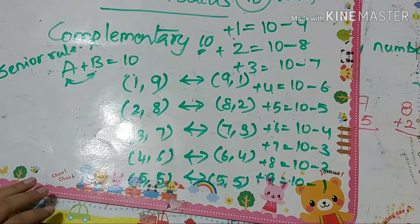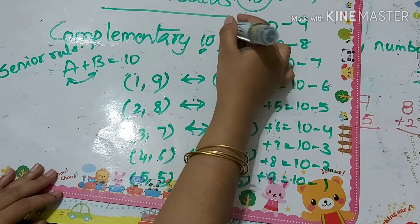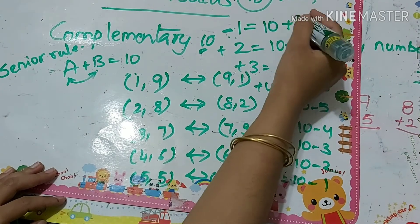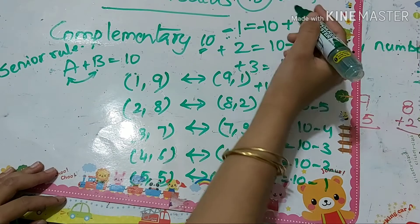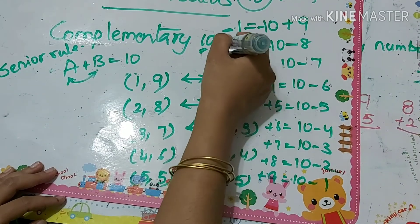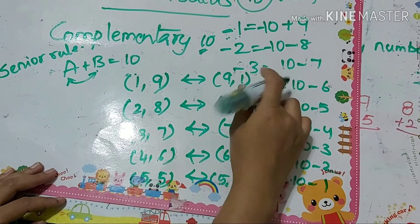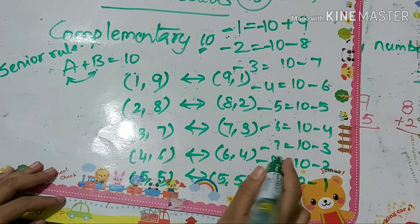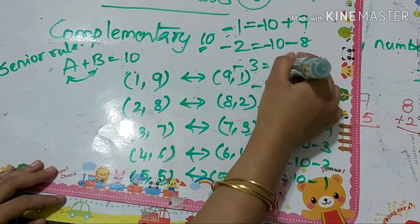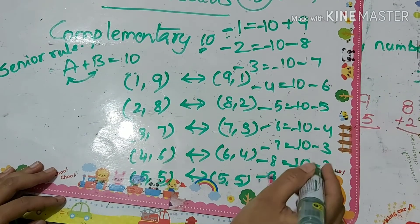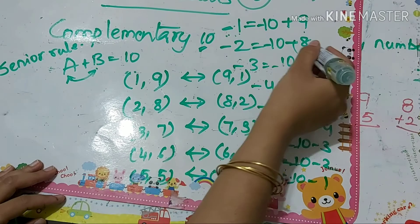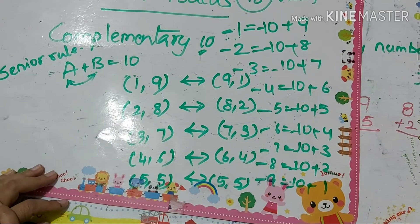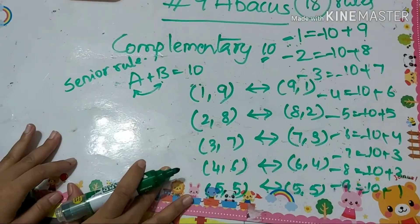And there are nine more formulas for negative values, giving 18 formulas in total. For negative values: minus 1 equals minus 10 plus 9; minus 2 equals minus 10 plus 8; minus 3 equals minus 10 plus 7; minus 4 equals minus 10 plus 6; minus 5 equals minus 10 plus 5. If I need to get negative values, I take the 10 value as negative.